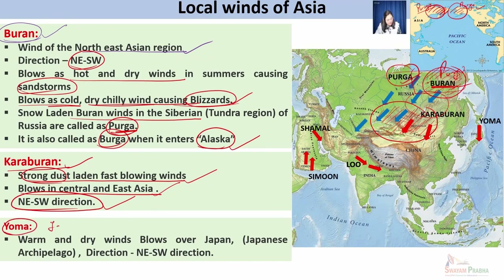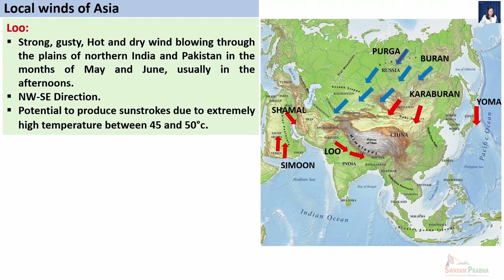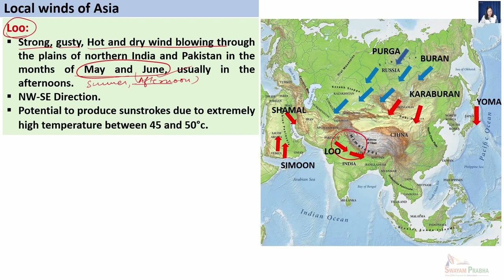Yoma is the local wind of Japan — warm and dry winds blowing over the Japanese archipelago prominently in a north-to-south direction. Another prominent local wind of Asia is Loo — a strong, gusty, hot and dry wind blowing over the north Indian plains and drier regions of Pakistan during the summertime, specifically in May and June, typically during the summer afternoon. The direction of Loo is from northwest to southeast. Loo has the potential to produce sunstrokes due to its extremely high temperature, which may exceed 40 degrees Celsius during the summer season.